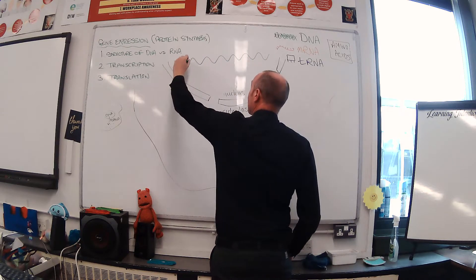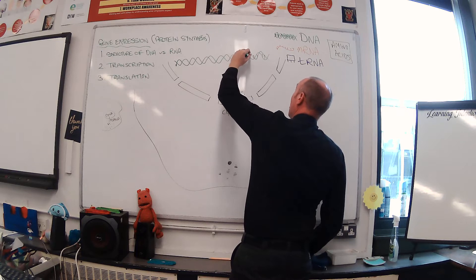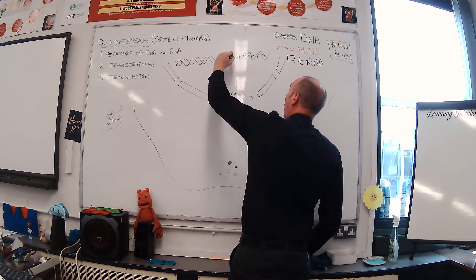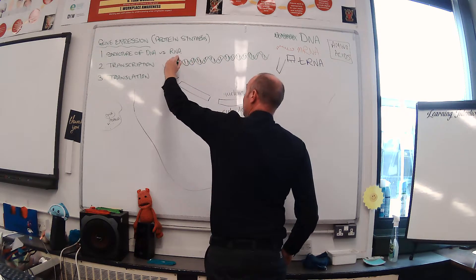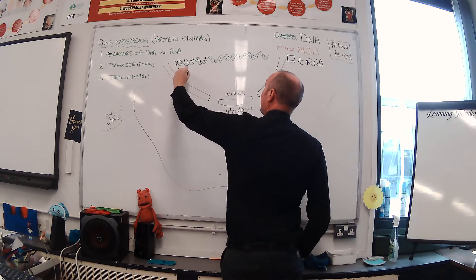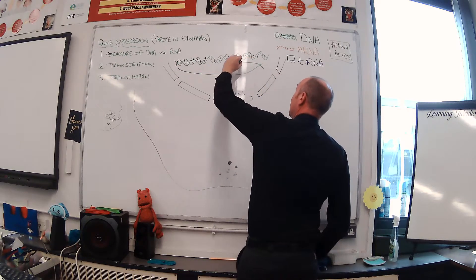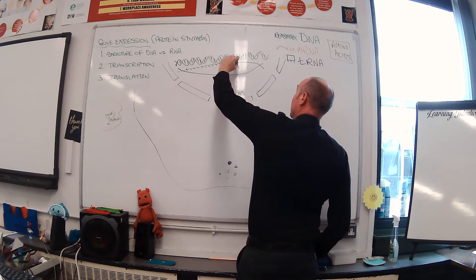We start off with what we know we find in the nucleus, which is DNA. So there's our DNA. The first stage of transcription is DNA opens up at one particular gene. A gene is a particular section of DNA which codes for one protein.